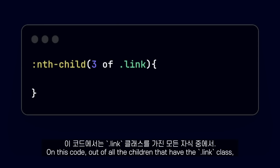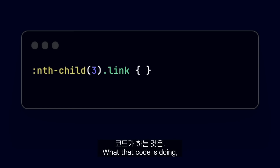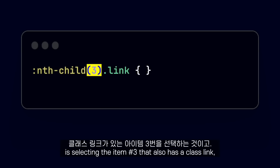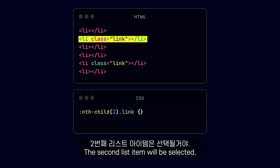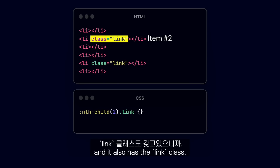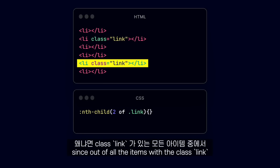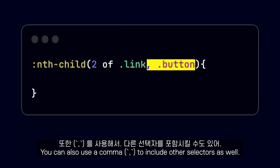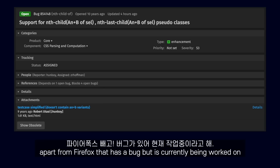On this code, out of all the children that have the link class, we are selecting number 3, which is very different from doing something like this. This code selects the item number 3 that also has a class link. For example, with this HTML and CSS, the second list item will be selected since it is item number 2 and also has the link class. But with the new 'of' selector syntax, the fifth list item will be selected since out of all items with the class link, it is the second one. You can also use a comma to include other selectors. The nth-child 'of' selector syntax is supported on all major browsers, apart from Firefox, which has a bug currently being worked on.